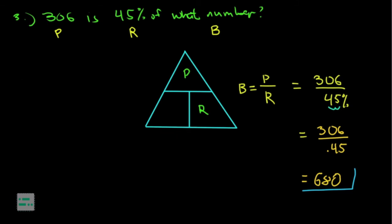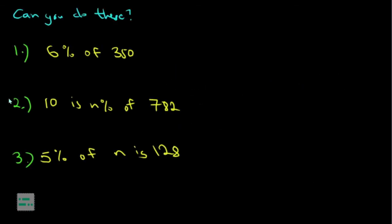So that's the method for solving percentage, base, and rate. Just remember this triangle: percentage, base, and rate. To solve for the percentage, you multiply base and rate. To solve for the base, divide the percentage by rate. To solve for the rate, you divide percentage by base. Now it's your turn. Can you do this? Let me know in the comments what your answer will be or if there's any part of this video that you didn't quite understand. Thanks for watching.